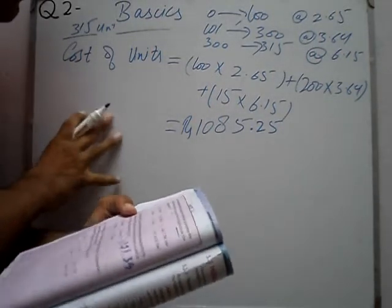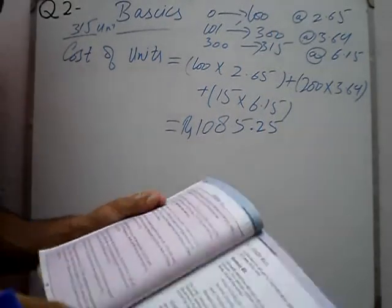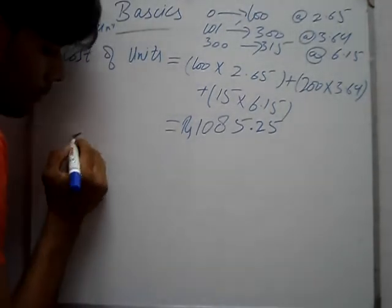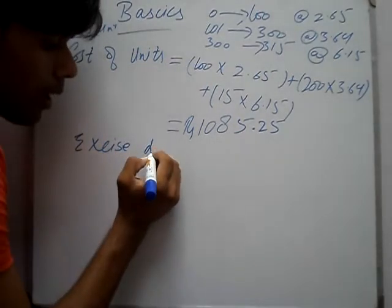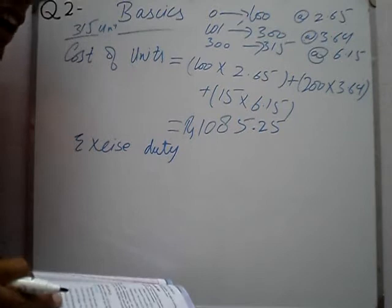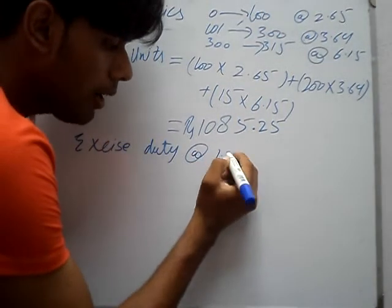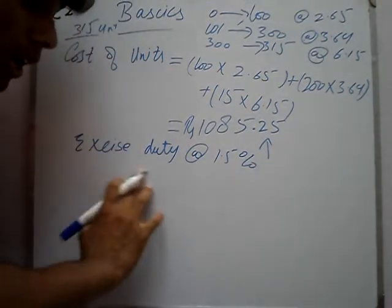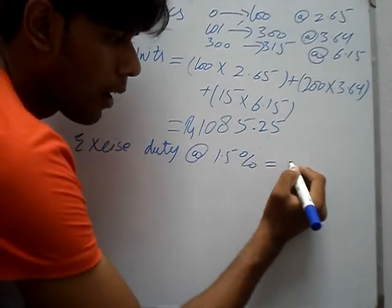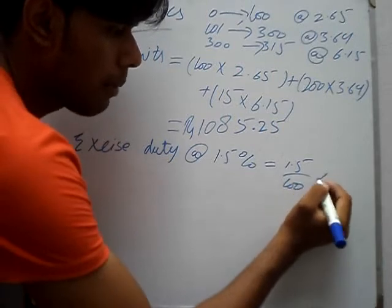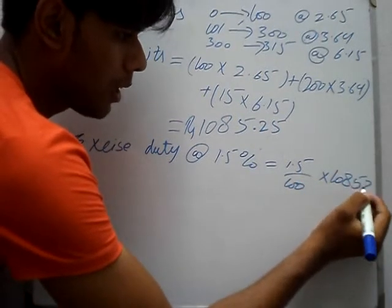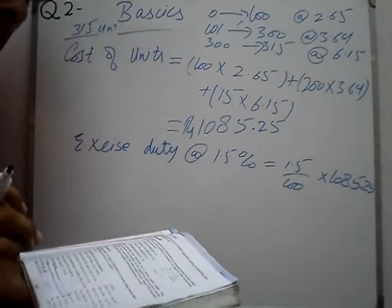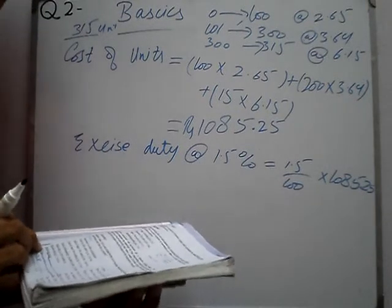This is the cost of units. Now, what else is included in the solution? What is excise duty? Excise duty is 1.5% of the cost of units. So we find 1.5% of Rs 1085.25. Excise duty comes to approximately Rs 15 at 1.5%. Electricity duty is a fixed rate of Rs 62.52.